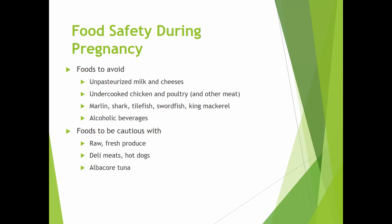To summarize foods to avoid: unpasteurized milk and cheeses, undercooked chicken and poultry, high-mercury fish, and alcoholic beverages. Things to be cautious with include deli meats, hot dogs, tuna, and raw fresh produce — it's not that you shouldn't eat produce during pregnancy, you just want to make sure it's from safe sources and is not contaminated.